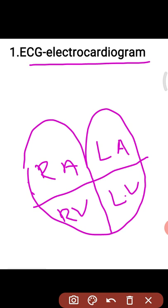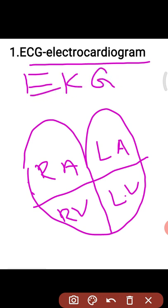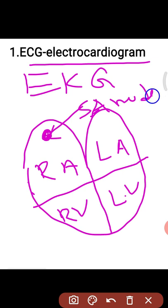The other name for the electrocardiogram is EKG, introduced by German scientists. The action potential in the heart originates near the top of the right atrium at a point called the pacemaker or sinoatrial node. The top of the right atrium is called the SA node or pacemaker.